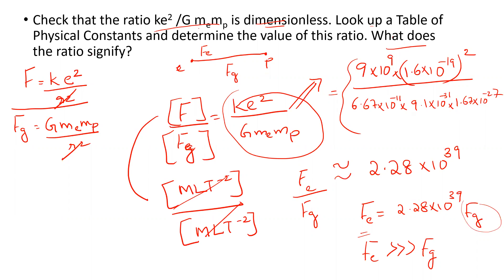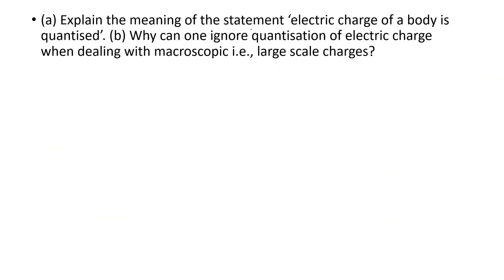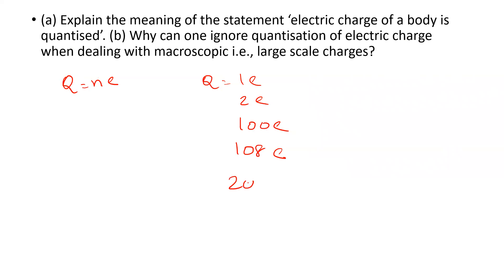Question 4: Explain the meaning of the statement 'electric charge of a body is quantized.' The quantization of charge means all charges existing in nature must be integral multiples of electronic charge. Charge can be 1E, 2E, 100E, 108E, or 2003E, but it cannot be 0.5E or 0.75E — only whole number multiples.